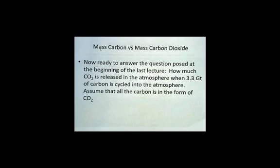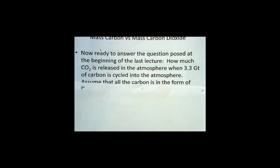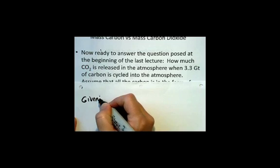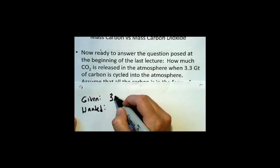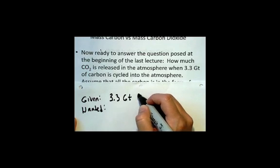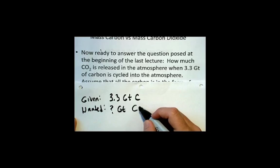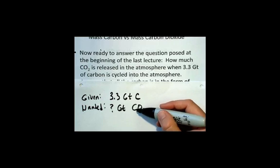We're going to answer this question. I'm going to put a fresh piece of paper up here so we have plenty of space. First of all, look at the question. What we want to always say is what's given and what's wanted in this particular question. What's given is 3.3 gigatons of carbon, and what we want to know is how many gigatons of carbon dioxide does that relate to, assuming that all the carbon in the 3.3 gigatons is bound in the form of carbon dioxide.